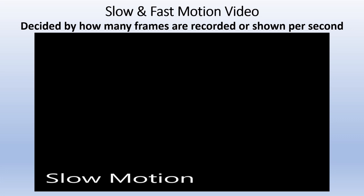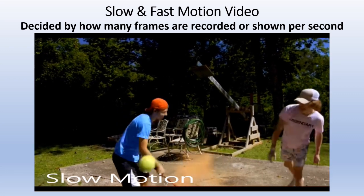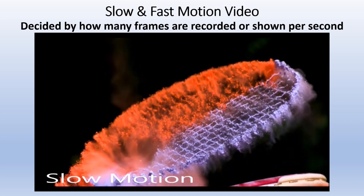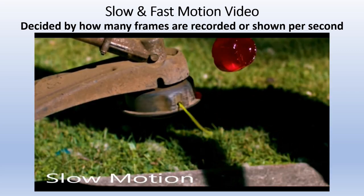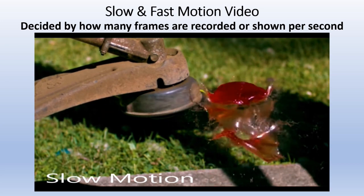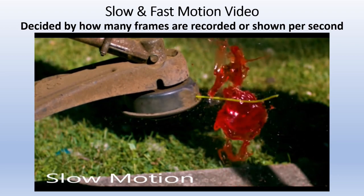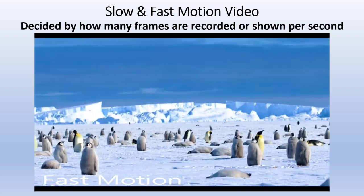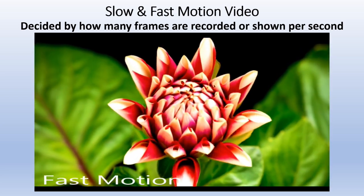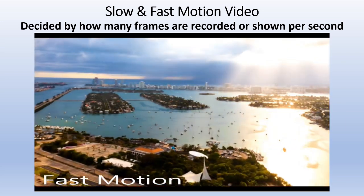Slow and fast motion videos are determined by how many frames are recorded or shown per second. The more frames per second you film, the slower the playback motion; fewer frames per second gives you faster motion. You can also set these in editors. For slow motion, you'll see a demonstration — for example, powder on a marker shown in very slow detail. For fast motion, a time lapse speeds things up, and you can set the interval from seconds to even hours.